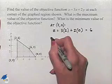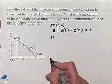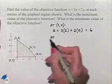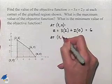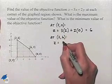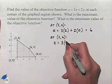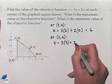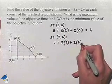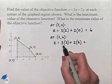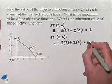Moving on, let's look at the point 2 comma 6. Our z value will equal 3 times our x coordinate of 2 plus 2 times our y coordinate of 6. That's going to be 6 plus 12 which is going to equal 18.